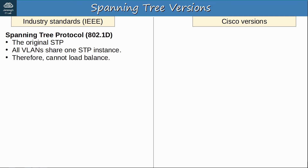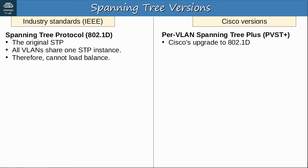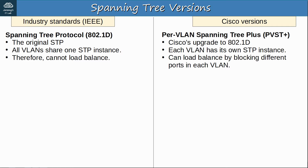So Cisco decided to improve upon this. They developed per VLAN spanning tree plus — actually before that they developed regular per VLAN spanning tree, which only supported ISL trunk encapsulation, no .1q. But let's forget about that version since everyone uses .1q for trunk encapsulation these days. PVST+ is Cisco's upgrade to 802.1d. Each VLAN has its own STP instance. In the previous lab, when we configured STP, we had to include the VLAN number in each command — for example, spanning tree VLAN1 root primary — because a separate STP instance is running for each VLAN.